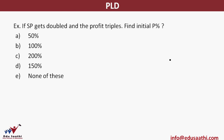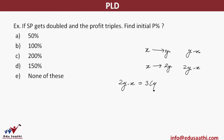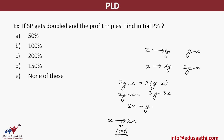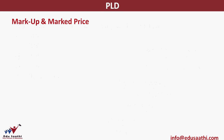Another example: if the selling price gets doubled then the profit triples — find the initial profit percentage. Let original cost price be x and original selling price be y. Original profit = y − x. New SP = 2y, new profit = 2y − x. As per the question, 2y − x = 3(y − x). Solving: 2y − x = 3y − 3x, giving 2x = y. So initially SP = 2x = 2 × CP, meaning the shopkeeper is making a 100% profit.